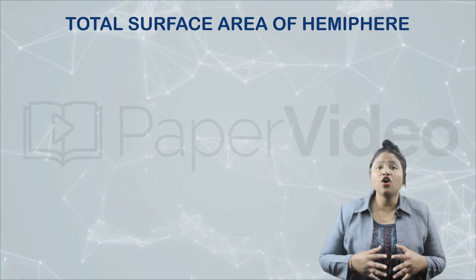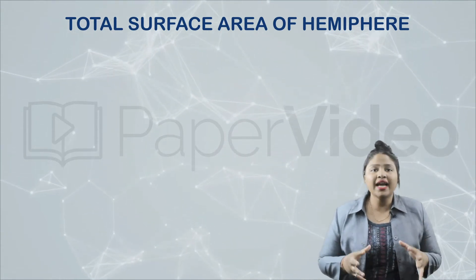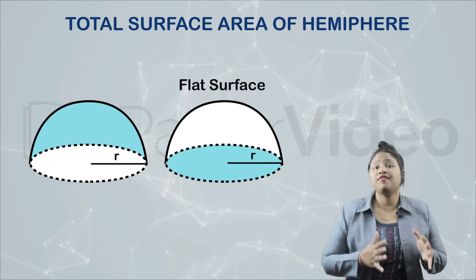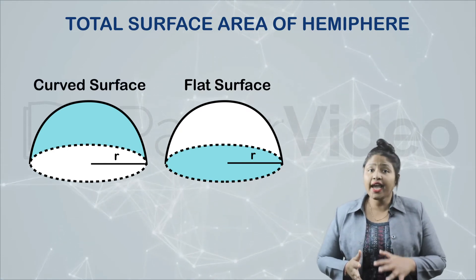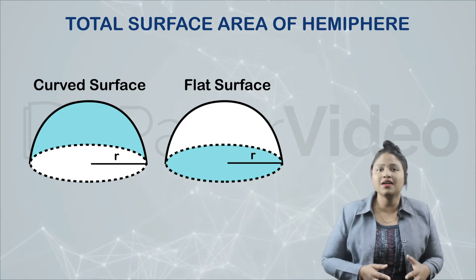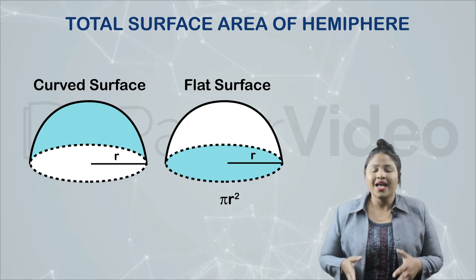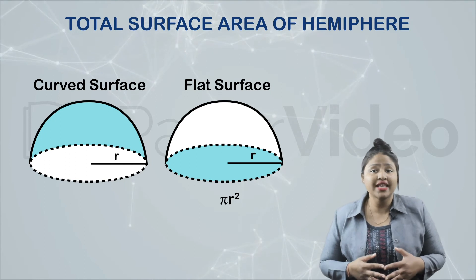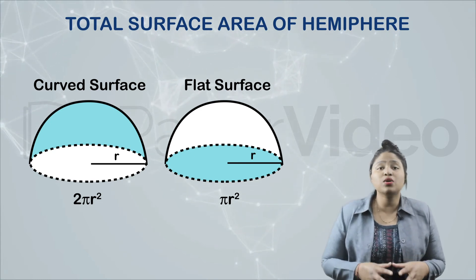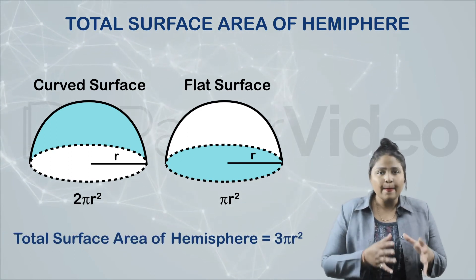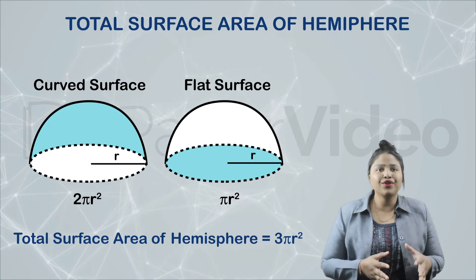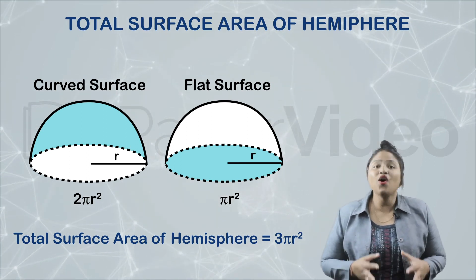What will be the total surface area of a hemisphere? It is the combined area of both the flat and curved surface of the hemisphere. A hemisphere has two surfaces: flat surface and curved surface. The area of the flat surface of a hemisphere of radius r is the same as the area of a circle of radius r, that is pi r square. The curved surface area is two pi r square. Combining these two, the total surface area is pi r square plus two pi r square, which simplifies to three pi r square.